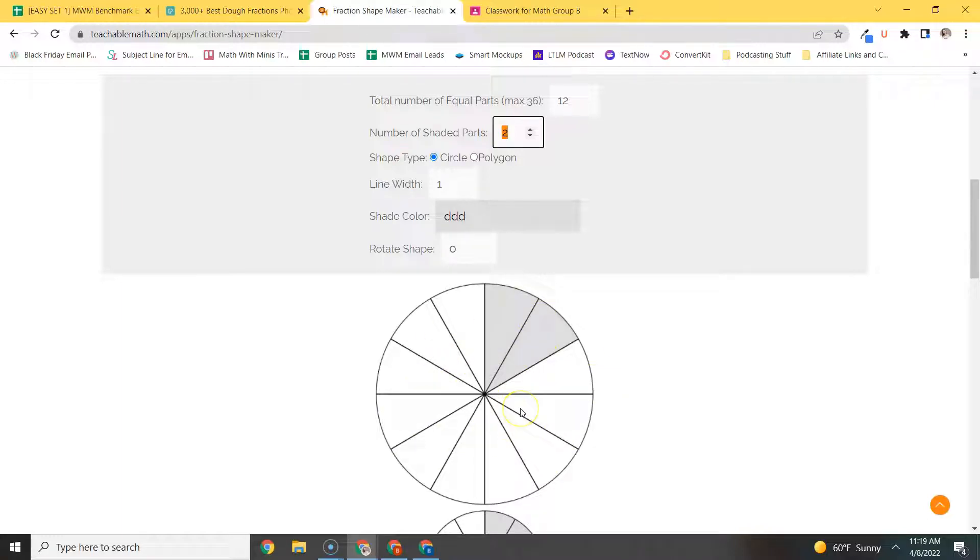Okay, so it's really important for students to understand that the denominator shows how many parts are needed to make a whole of that. And then the shaded part, that would be your numerator, the number on top.